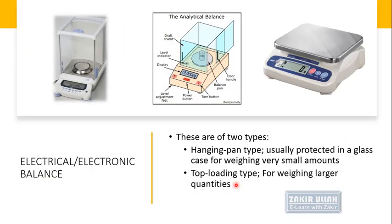There are two types of electronic balances: the hanging pan type and the top loading type. The hanging pan type is usually enclosed in a glass case and is used for weighing small amounts. The top loading type is used for weighing larger quantities or heavier objects.